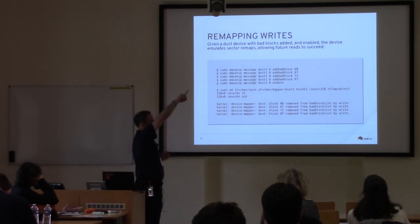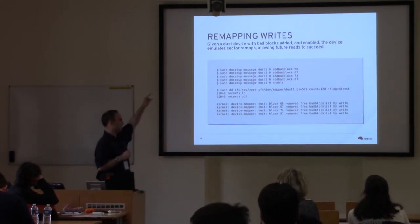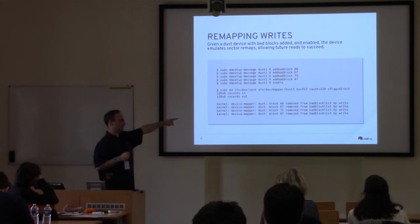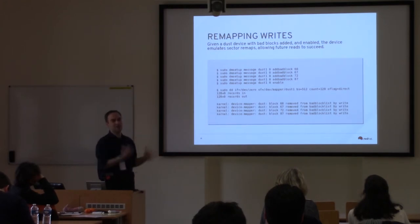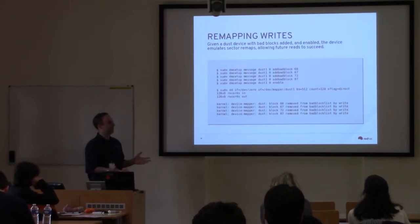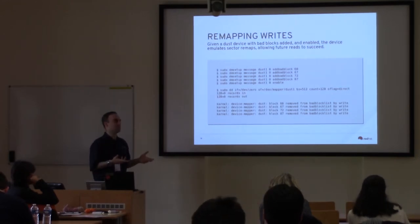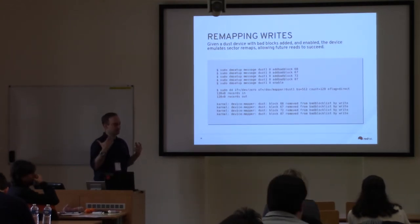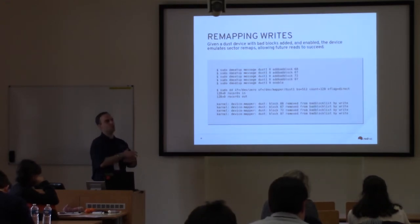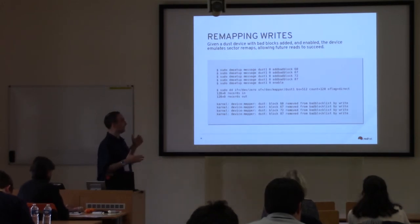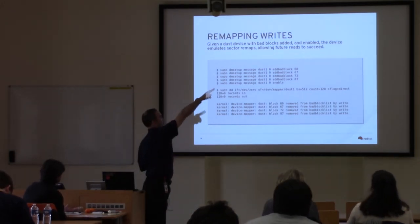For writes, this device will remove the block from the bad block list when you write to it, emulating the behavior of a drive remapping a sector — so subsequent reads will succeed. Instead of a simple target that unconditionally fails reads, this emulates the actual drive behavior. You can add bad blocks 60, 67, 72, 87, then enable — and in sysfs you can see when those blocks are removed from the bad block list. Drives won't tell you when they're remapping sectors; in SMART they'll tell you how many, but not where. When you see the remap sector count increase, you know you should probably replace that drive.